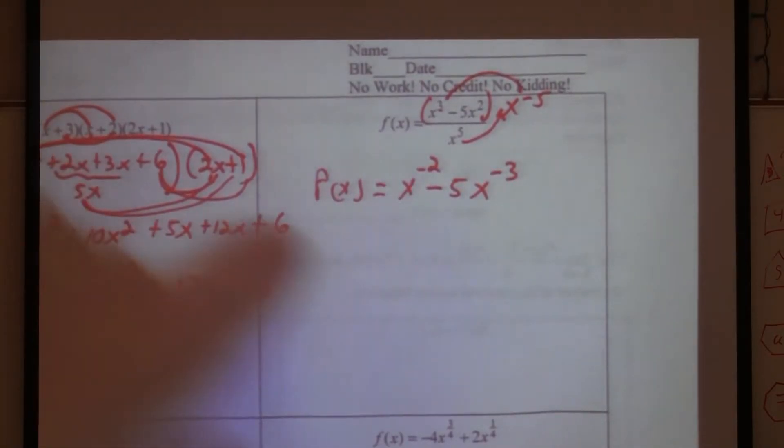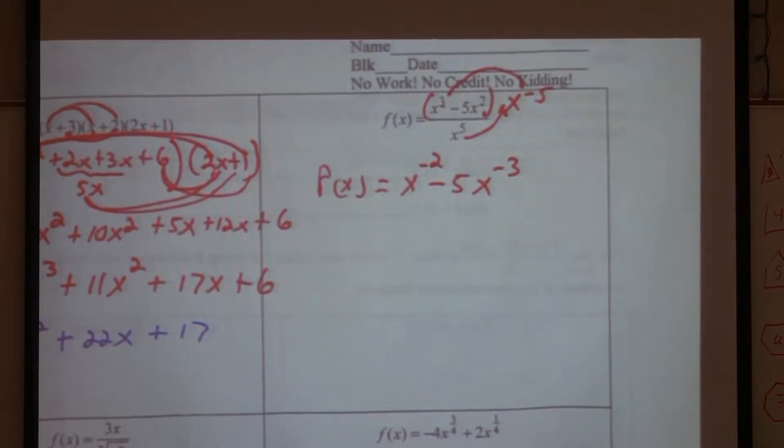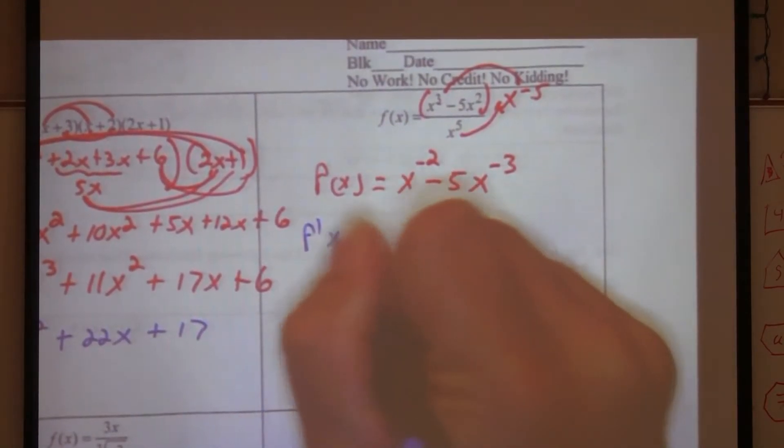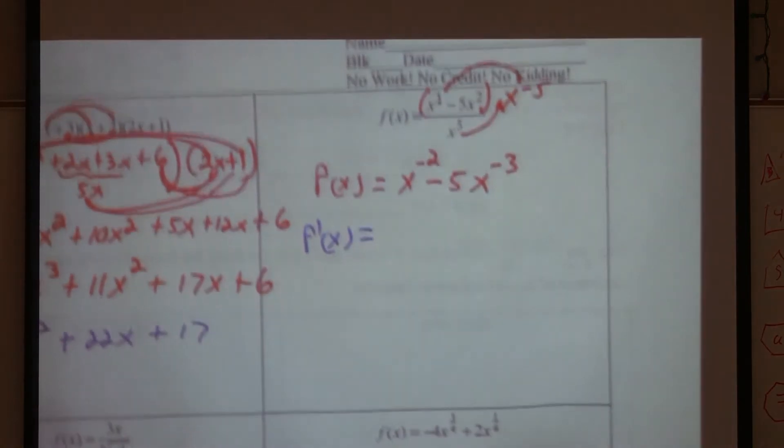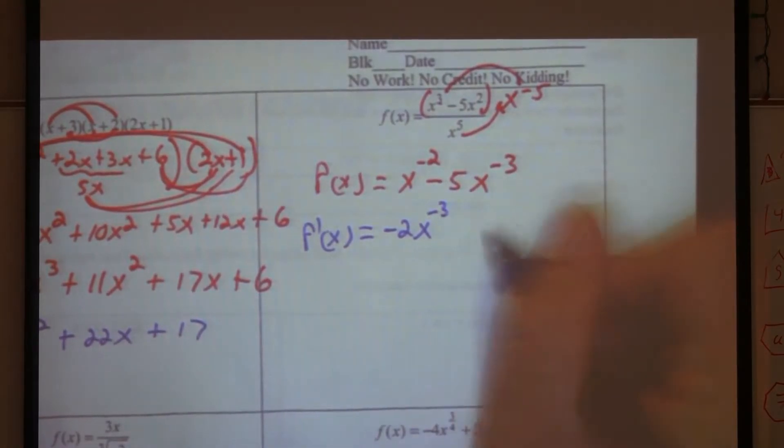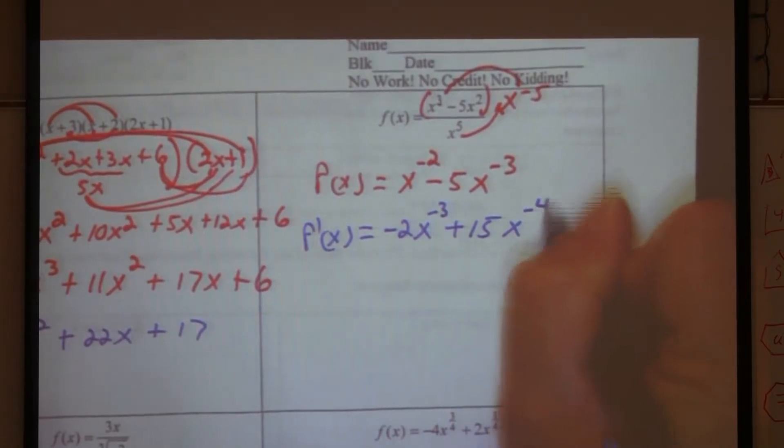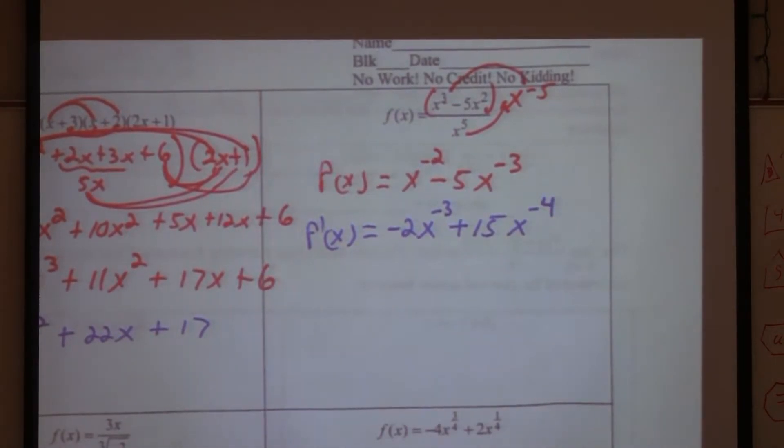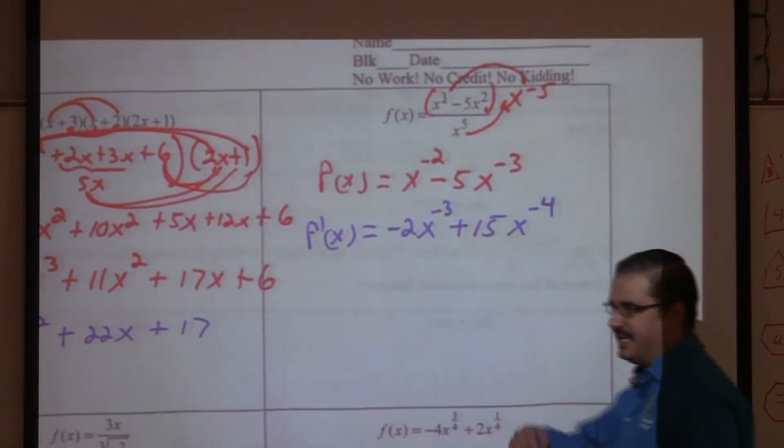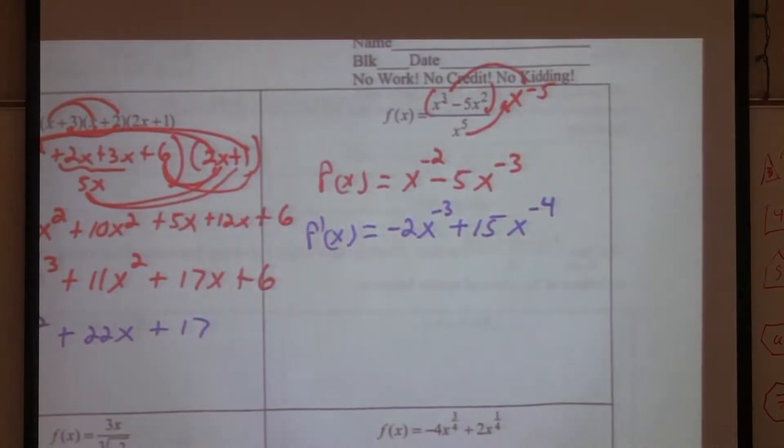So can we get the derivative of this guy now? Yes. All right. Let's do it. What's my derivative? Negative two x to the negative three. Plus 15 x to the negative four. Not two? No. Why is it not two? Oh. You're taking away one from a negative, so it's becoming more negative, right? More negative. Not less negative. Even though that's what we want in this world. Less negativity.